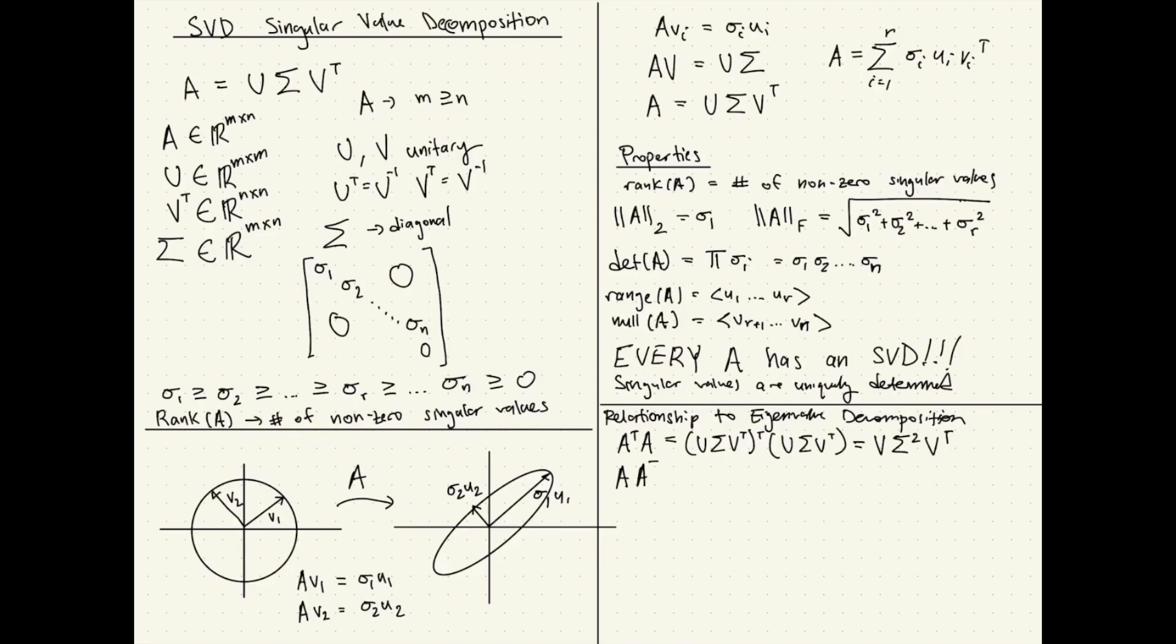A, A transpose. We'll do kind of similar, and we'll use the property now. Again, V itself is unitary. This will give us U sigma squared U transpose.